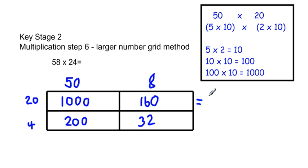Once we've got the answers in each of the boxes, we then add up the total along each row. So we've got 1160 and then we've got 200 plus 32 is 232.